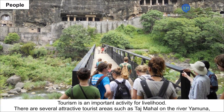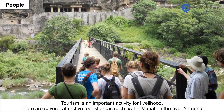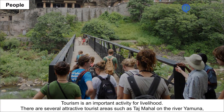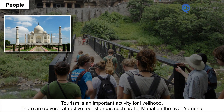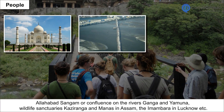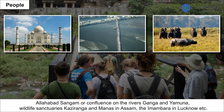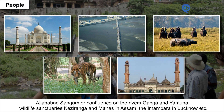Tourism is an important activity for livelihood. There are several attractive tourist areas such as the Taj Mahal on the river Yamuna, Allahabad Sangam or confluence of the rivers Ganga and Yamuna, wildlife sanctuaries Kaziranga and Manas in Assam, and the Imambara in Lucknow.